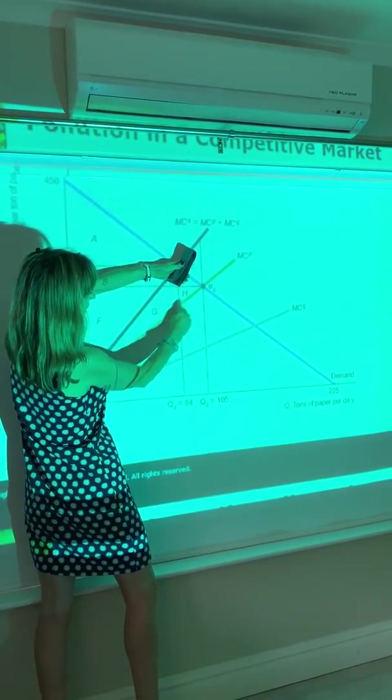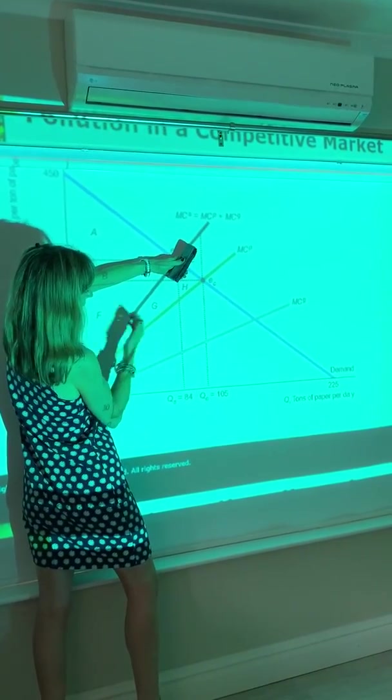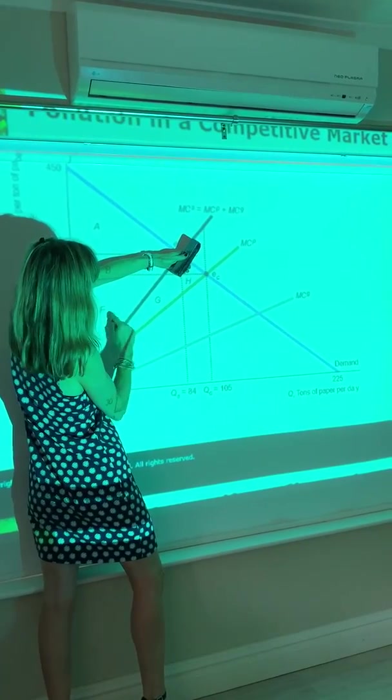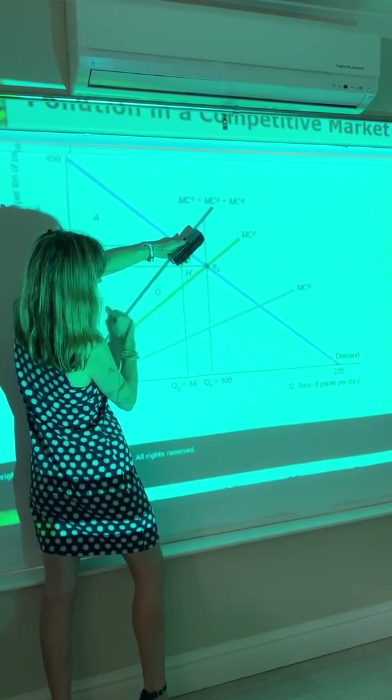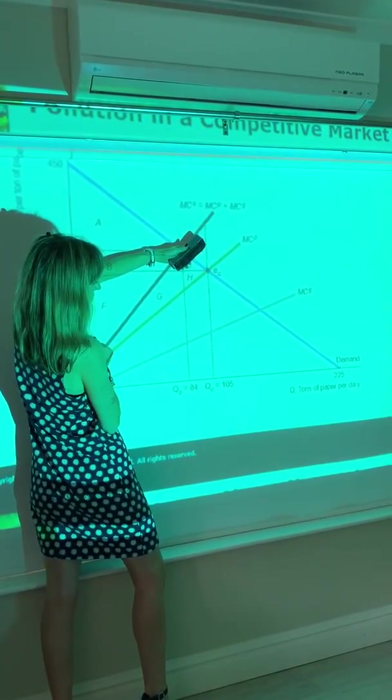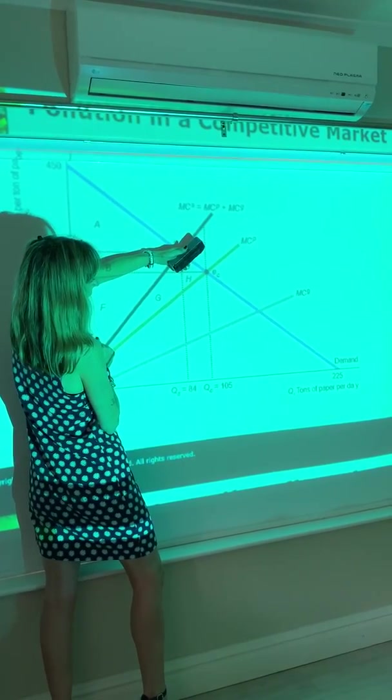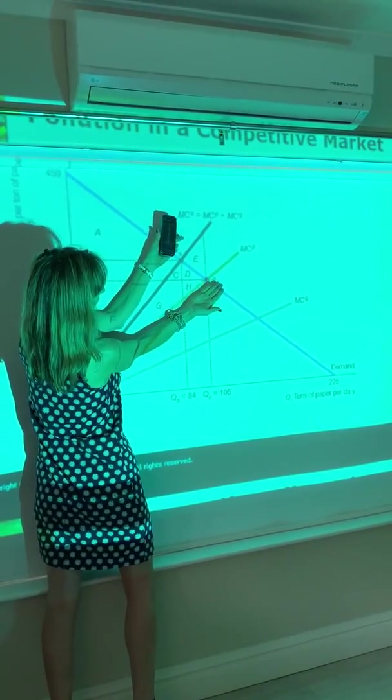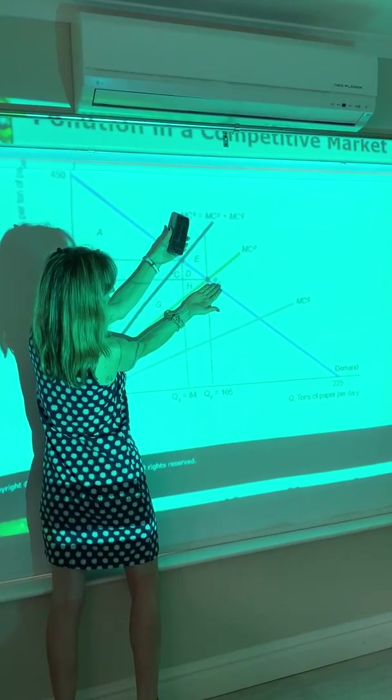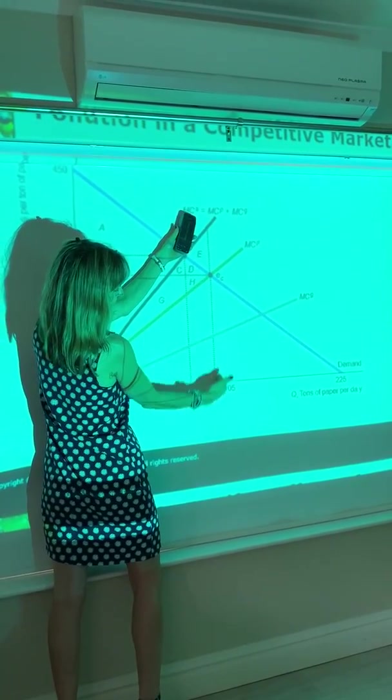But that ignores, F, G, and H ignores the cost of the externality. To get the true social producer surplus, you should take this F, G, and H and subtract off the externality cost. And what is the externality cost? The distance between these two curves up until the output produced.